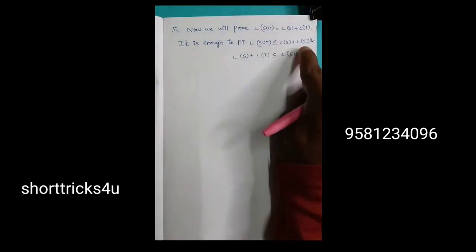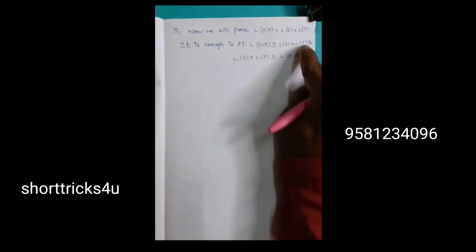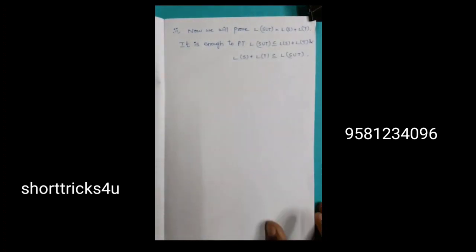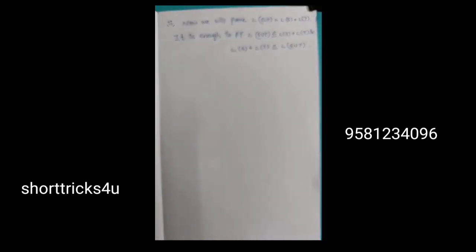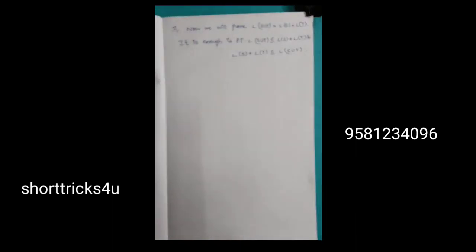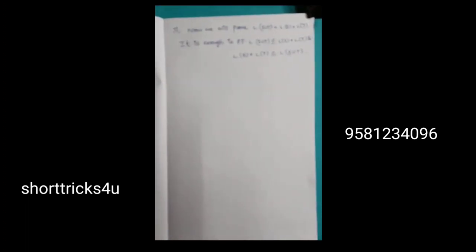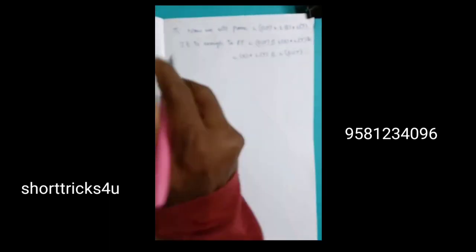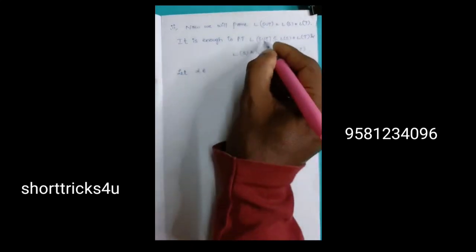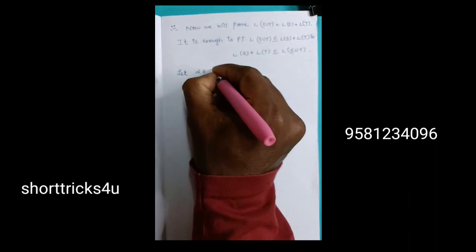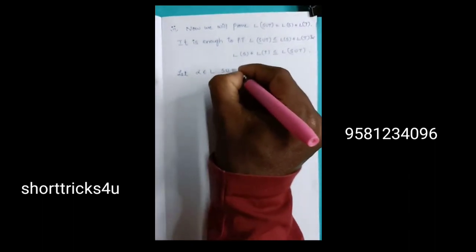First one we have to prove. If the element is alpha and the linear combination is a subspace, L of S union T — L of S is a linear span, and a linear span is a vector space.